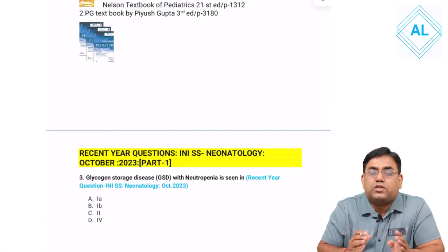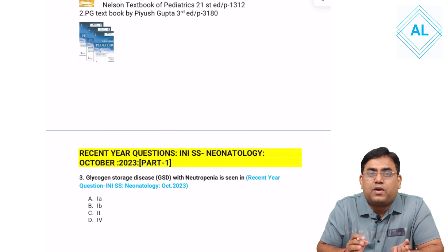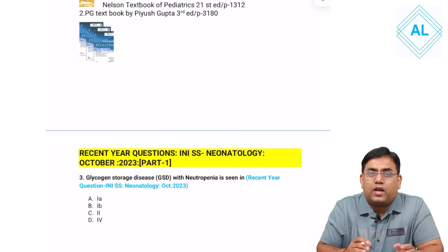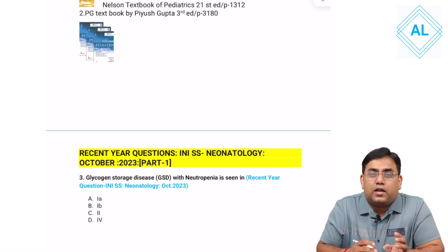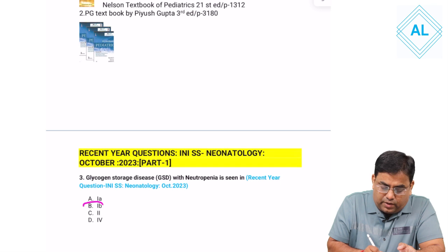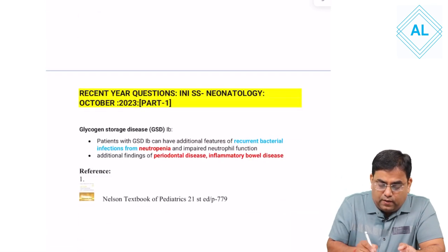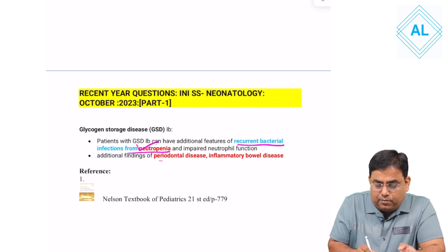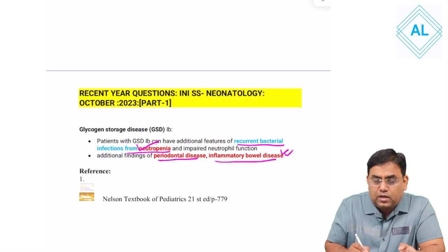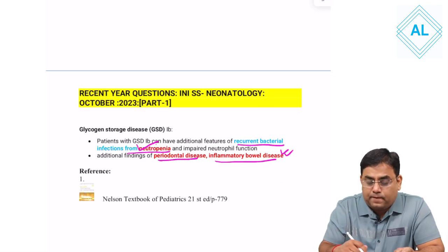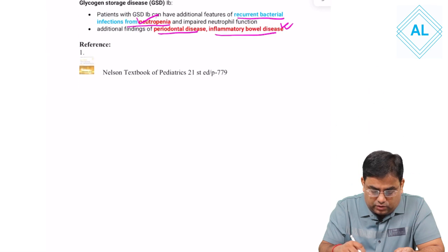Next question: A glycogen storage disease with neutropenia is seen in which type? Glycogen storage disease type 1 is divided into 1a and 1b. The characteristic finding of type 1b is neutropenia with recurrent infections, along with periodontal lesions and inflammatory bowel disease. So the answer is GSD type 1b.